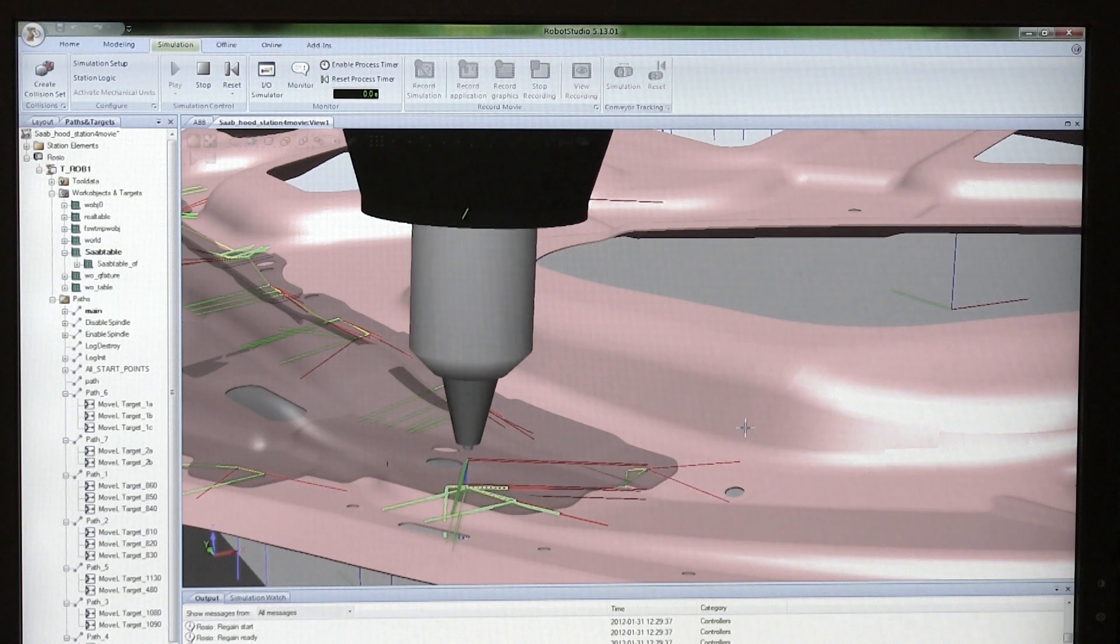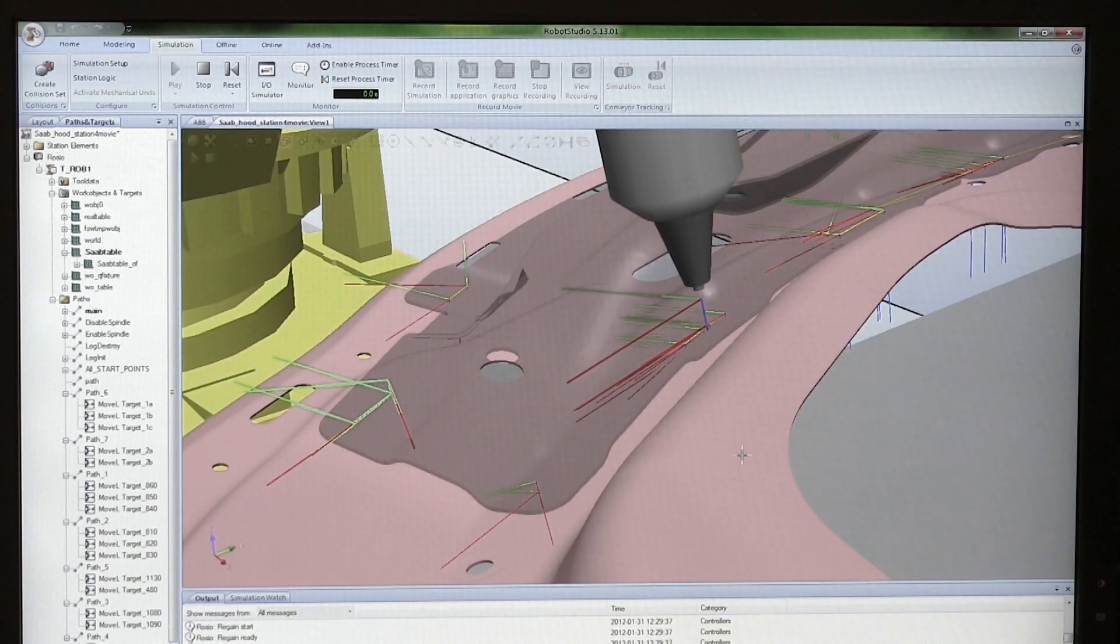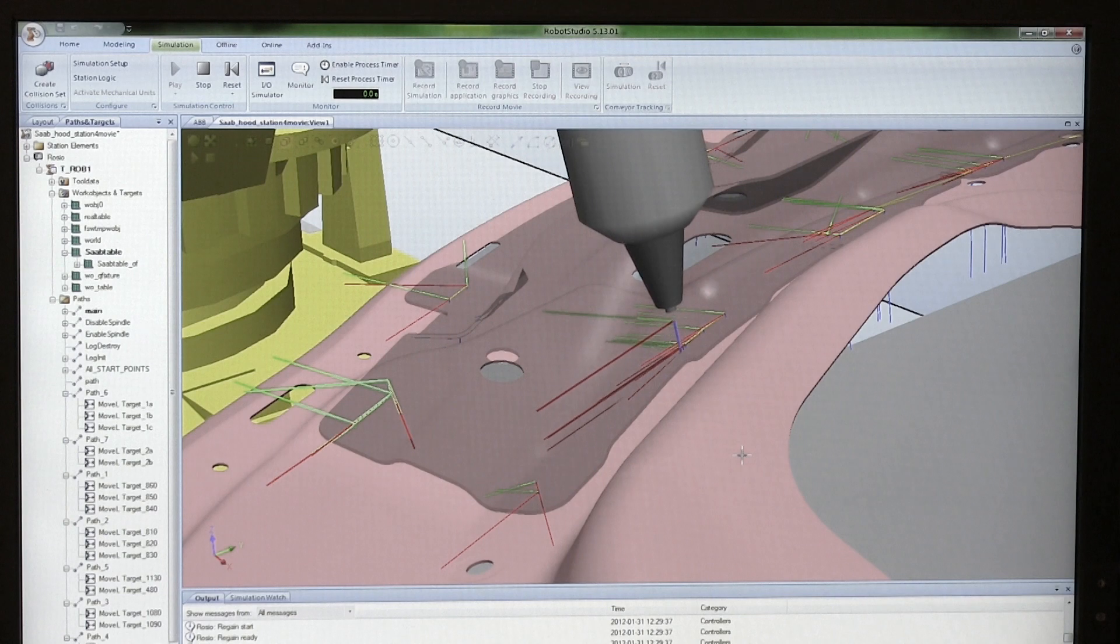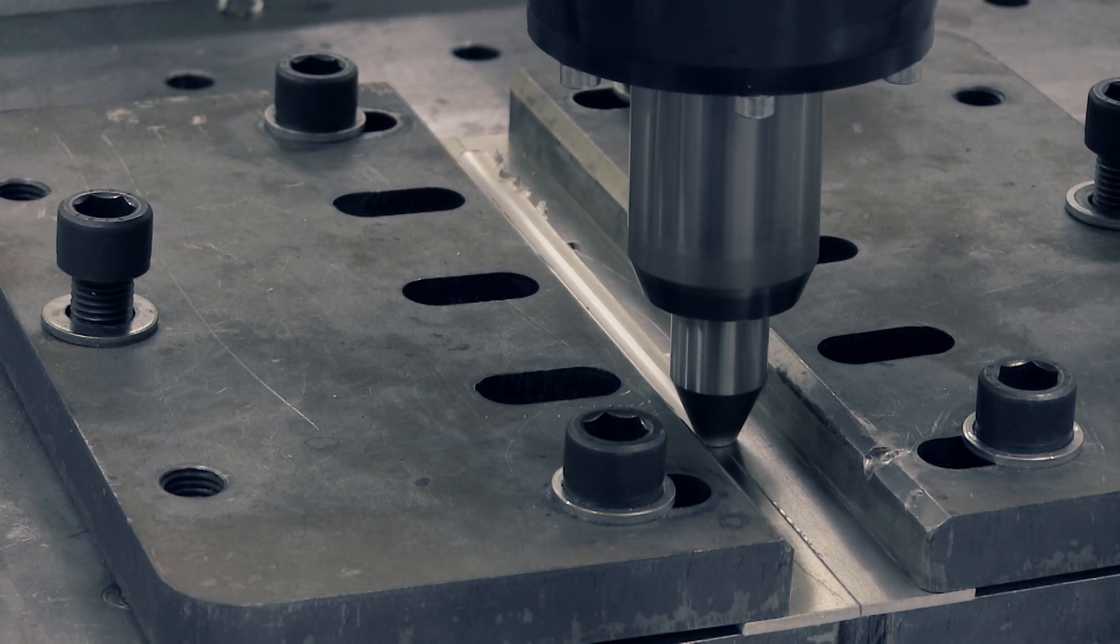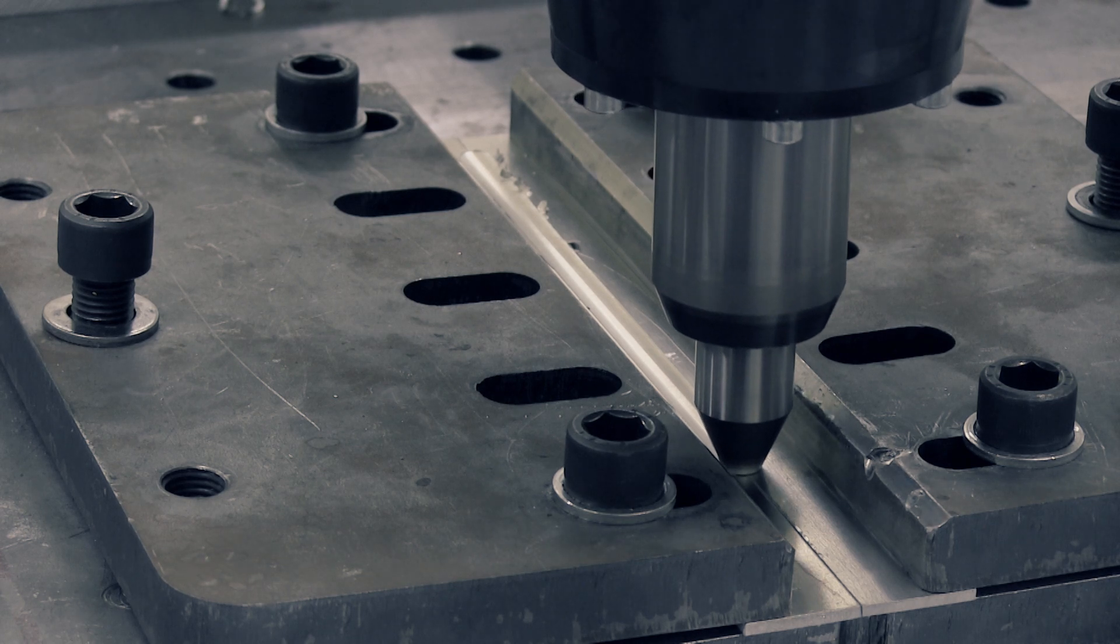Another demonstrator shows the capabilities of welding steel and nickel based alloys by robot. These materials require much higher temperature and process forces than aluminum, which puts more demands on the robot.